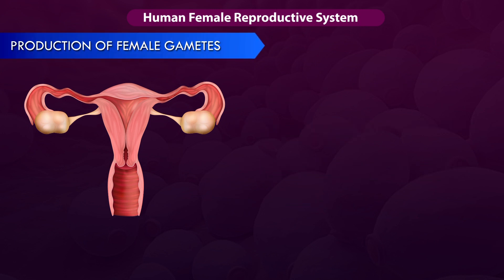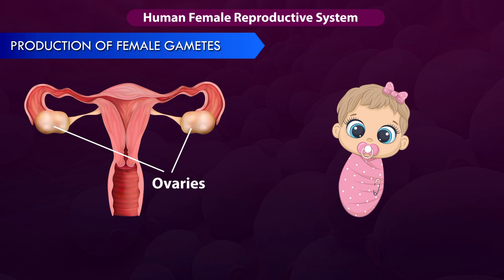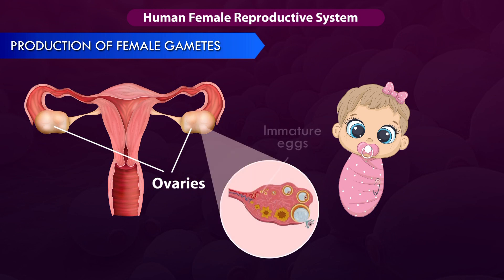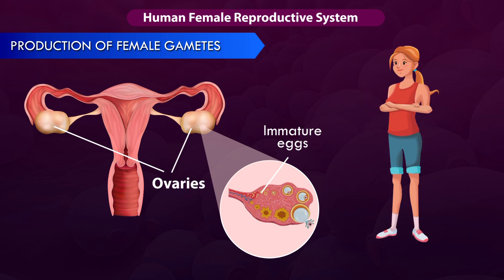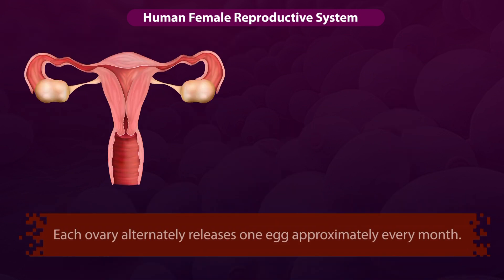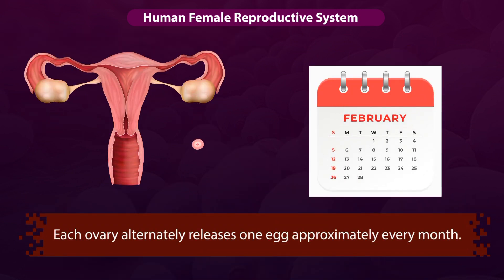First, let us see the production of female gametes or egg cells. This task is done by the ovaries of the female reproductive system. By birth, girls contain a pair of ovaries. Each ovary contains thousands of immature eggs. On reaching puberty, these eggs start maturing and get released. Each ovary alternately releases one egg approximately every month.